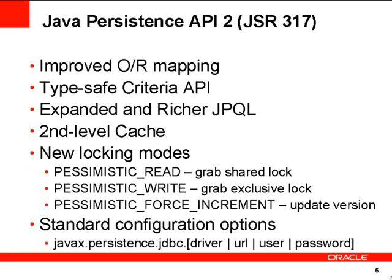The next thing about Java I would like to talk briefly about is Java Persistence API 2.0. This is yet another API that got an extreme makeover in Java EE 6.0. The key focus has been improved object-relational mapping, allowing you to have a much richer Java model from the database perspective. Something new added in JPA 2 is a type-safe criteria API that allows you to write type-safe query language. Instead of using JPQL, in which you write string-based query language, this is type-safe. You can have much better tooling and much more robust programs where errors are detected much earlier. There are also things like expanded and richer JPQL, second-level cache in a standard way using JPA 2, new locking modes, and standard configuration options for your Persistence.xml.